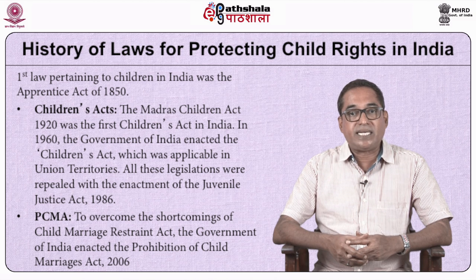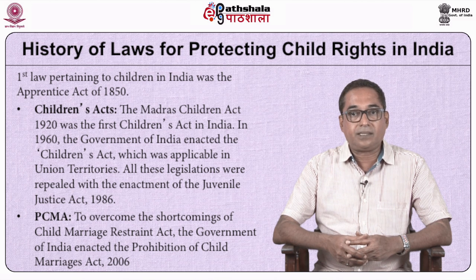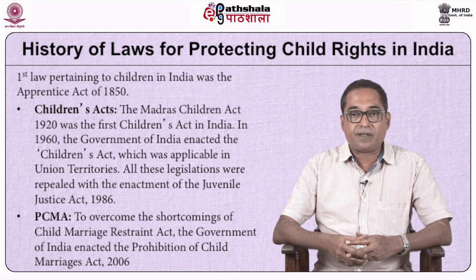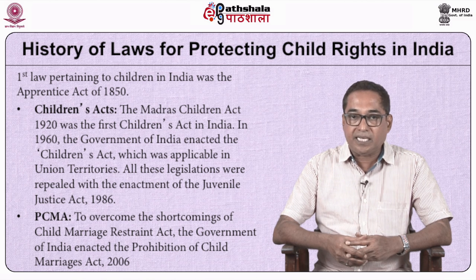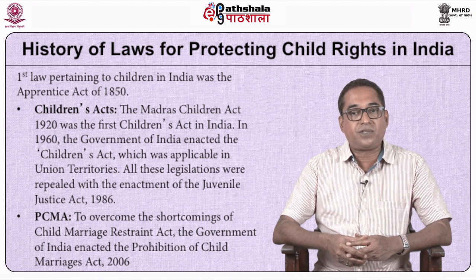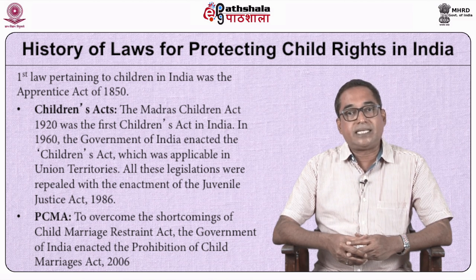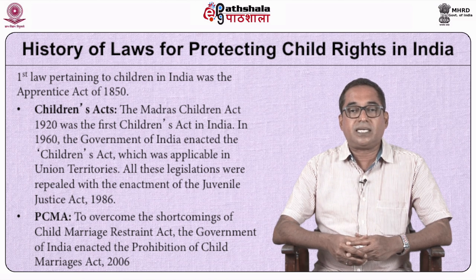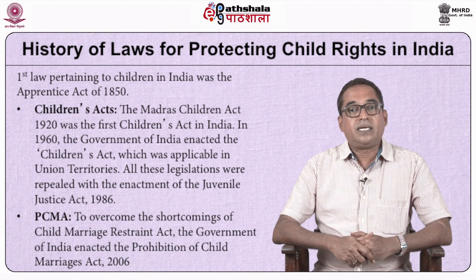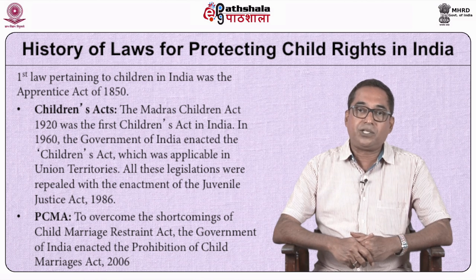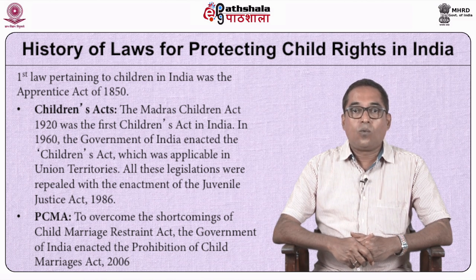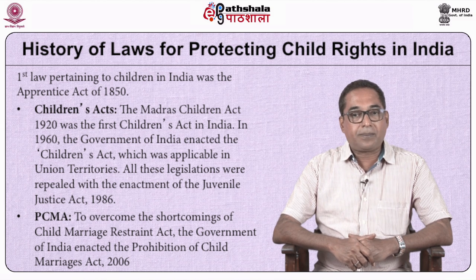The Child Marriage Restraint Act 1929 was amended in 1978. UNICEF began its work in India in 1949. The United Nations created a special fund for children which later became UNICEF, which was granted the status of a permanent international organization in 1953. The UN General Assembly adopted the Declaration of the Rights of the Child in 1959. The Government of India enacted the Children's Act 1960, applicable in Union territories. India formulated its first national policy for children in 1974. The year 1979 was declared the International Year of the Child by the UN. The Juvenile Justice Act enacted in 1986 was the first juvenile justice law in India uniformly applicable across the country.